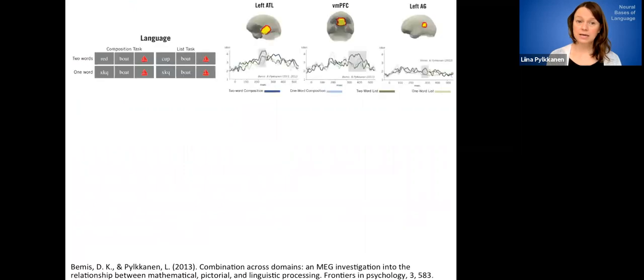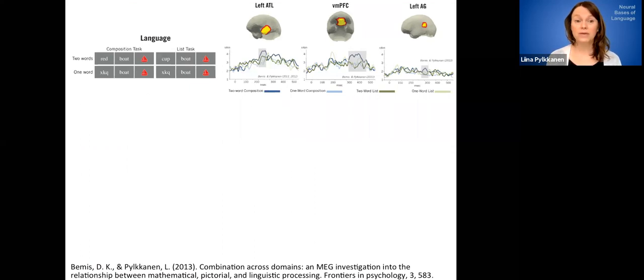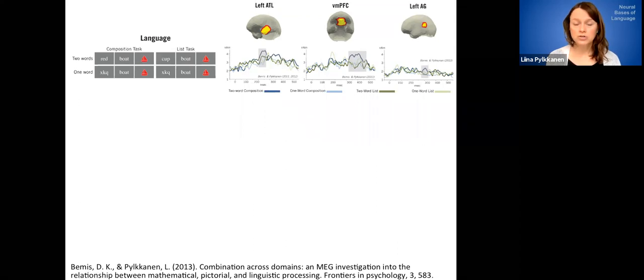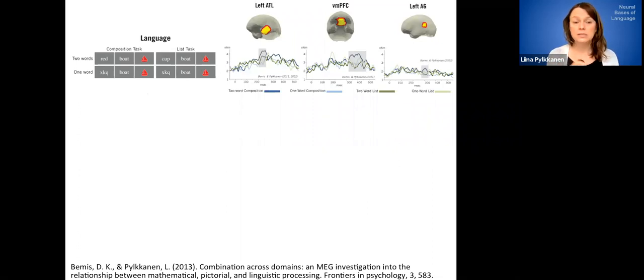And so this is not to say that we should not be interested in this general question of whether the neural signatures of language that we discover through our research might be shared with other domains. And so for example, in my own group's work, we've engaged in this kind of research. So I've told you about these MEG correlates of basic composition. So when we're just building a simple phrase, we see systematic effects in the left anterior temporal lobe, in the ventromedial prefrontal cortex, and sometimes we've also seen correlates of that process in the angular gyrus in the left hemisphere. And so we've actually created minimally contrasting versions of this paradigm where the input to the basic composition is not words, but rather stimuli from other domains.